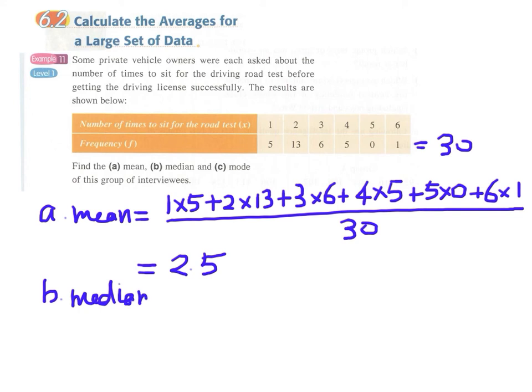The median will be the number at the middle. Since we have 30 persons, it will be between the 15th and 16th value. Looking at the frequency table, the 15th one